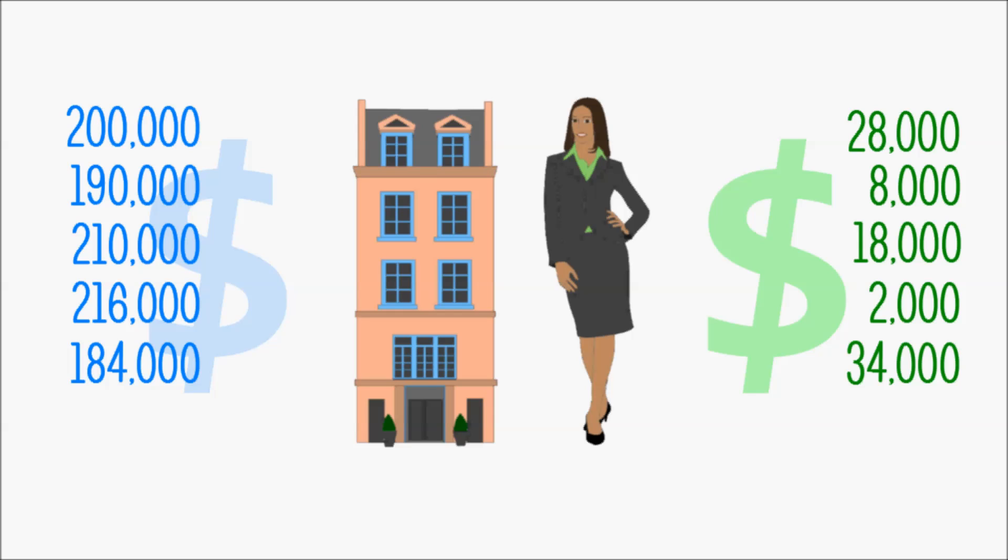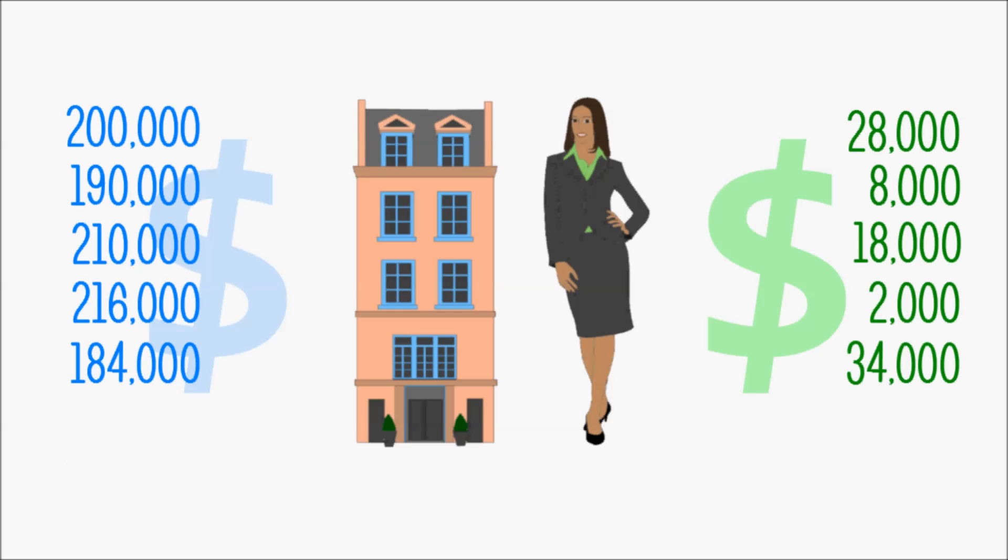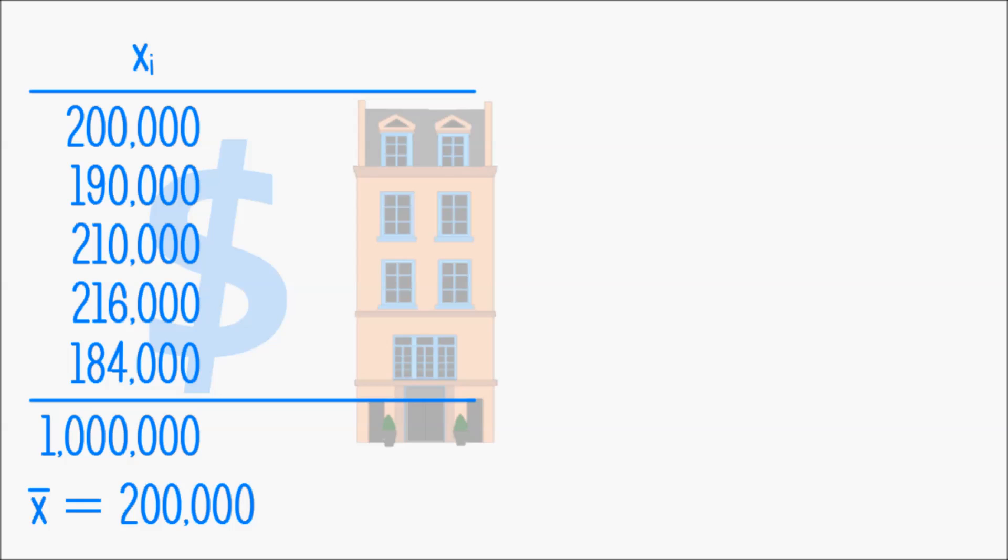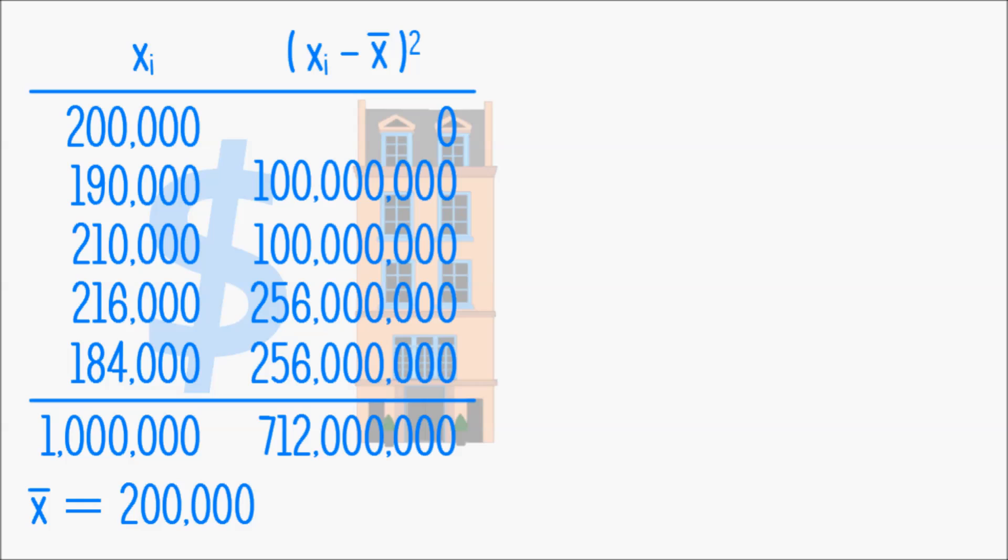Now let's just for fun calculate the standard deviation again for both datasets. So we first find the average, then the square of all data values minus the average, the sum of that divided by 5, and taking the square root gives us approximately $11,933 per month for Patrick's agency.